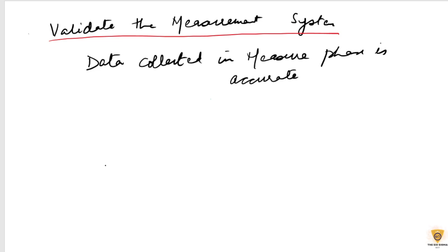If the data collected is wrong or incorrect, our analysis is also wrong, and the root cause that we reach will also be wrong, and the solutions will also be wrong. Hence to avoid all this, we go ahead and validate the measurement system. We determine the equipment's accuracy and precision.